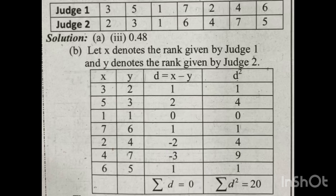We need to consider the x values, y values, and a d column. D is the difference of ranks. The d values are: 5 minus 3 = 2; 1 minus 1 = 0; 7 minus 6 = 1; 2 minus 4 = minus 2; 4 minus 7 = minus 3; 6 minus 5 = 1. This is the d column.